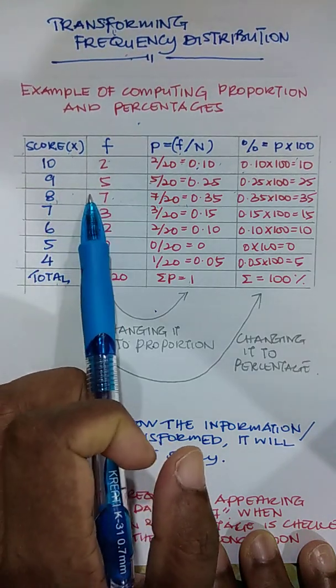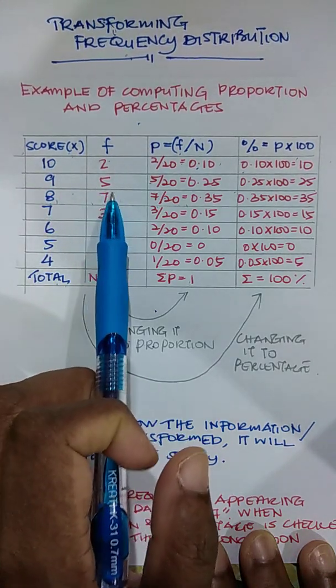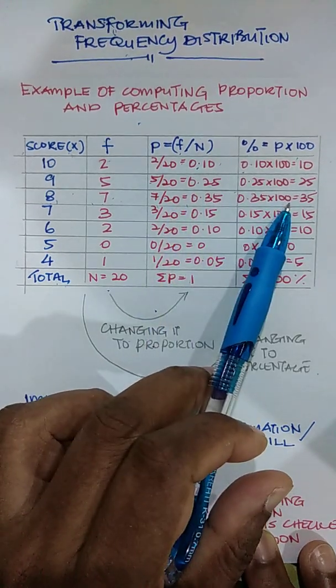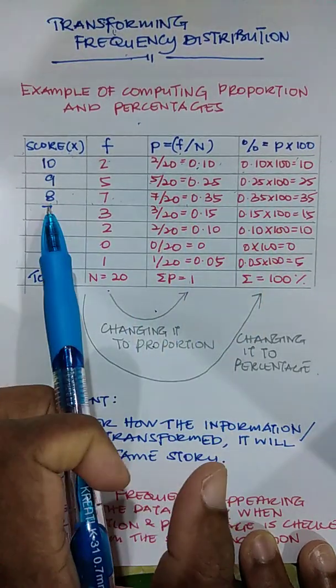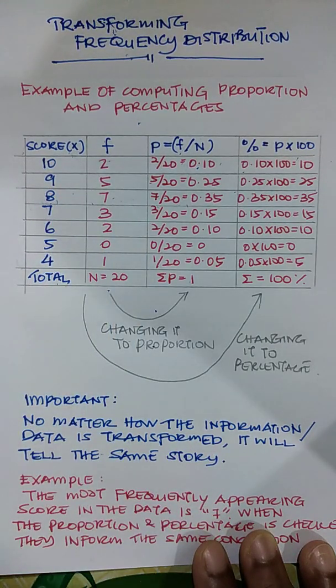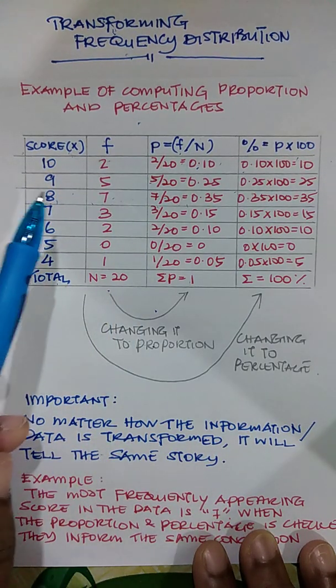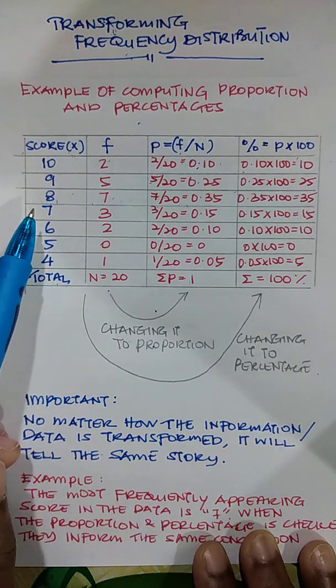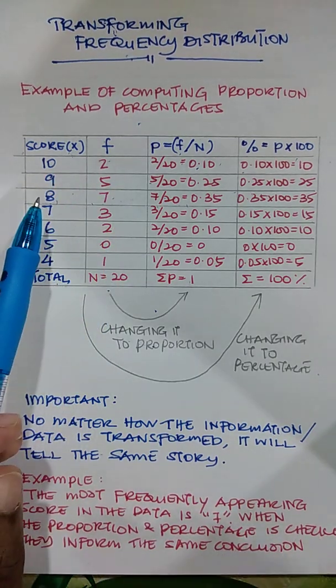So basically, even if you get your frequency or your proportion or percentages, it tells the same story that score 8 is the most occurring value or most occurring data in your data set. Thank you.